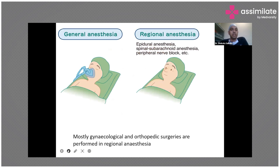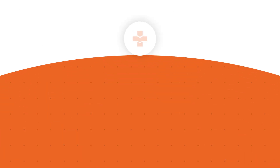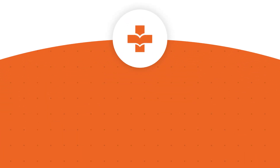The difference between general anesthesia and regional anesthesia: in general anesthesia, the patient is connected to the ventilator via an anesthesia circuit. In regional anesthesia — most commonly done by epidural, spinal, or peripheral nerve block — the patient is fully conscious and awake, aware of their surroundings. Gynecological and orthopedic surgeries are commonly performed under regional anesthesia. Thanks for listening.